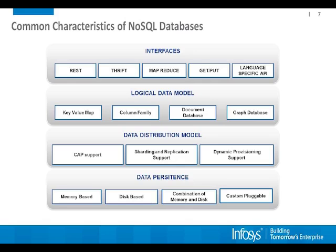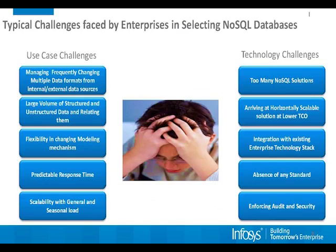Different NoSQL technologies support different characteristics. The challenges everyone faces in picking the right NoSQL database are both from the use case perspective and the technology perspective. From the use case side: you need to support multiple types of data sources which change over short time spans, handle large volumes of data, maintain flexibility in changing machine learning models, and achieve predictable response times and scalability with general and seasonal load.